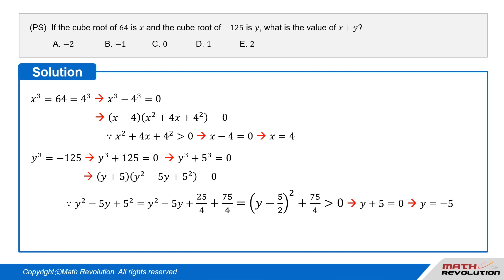y plus 5 times (y squared minus 5y plus 5 squared) equals 0. Since y squared minus 5y plus 25 over 4 plus 75 over 4 equals (y minus 5 over 2) squared plus 75 over 4 is greater than 0 is always true, we have y plus 5 equals 0, or y equals negative 5.